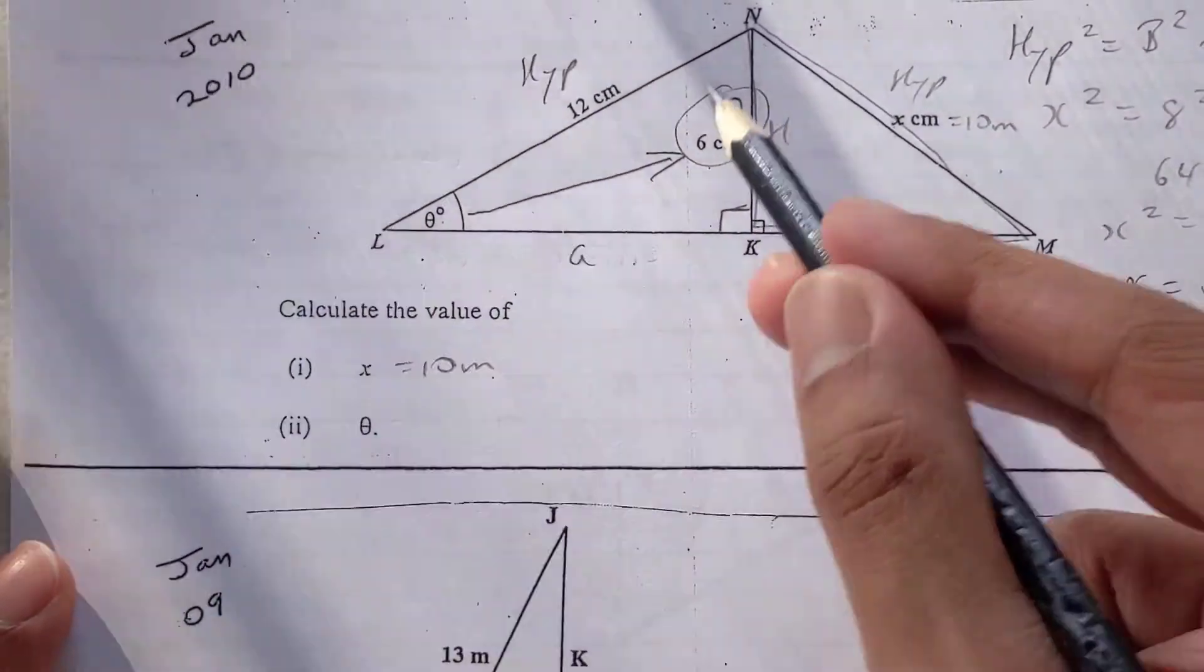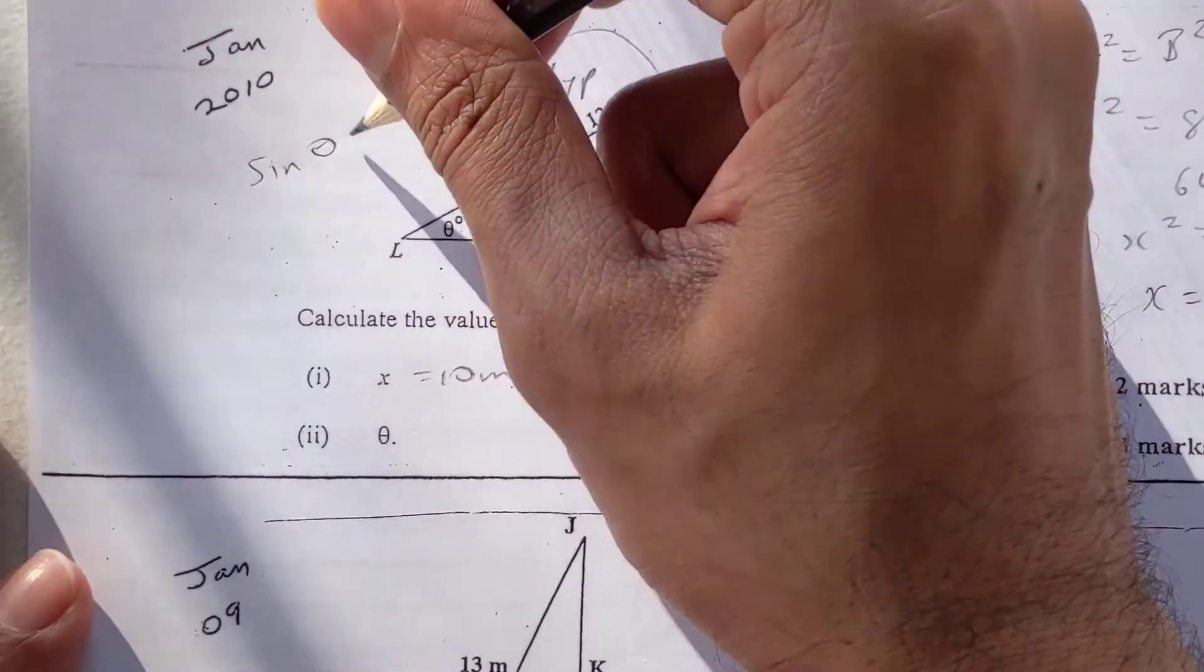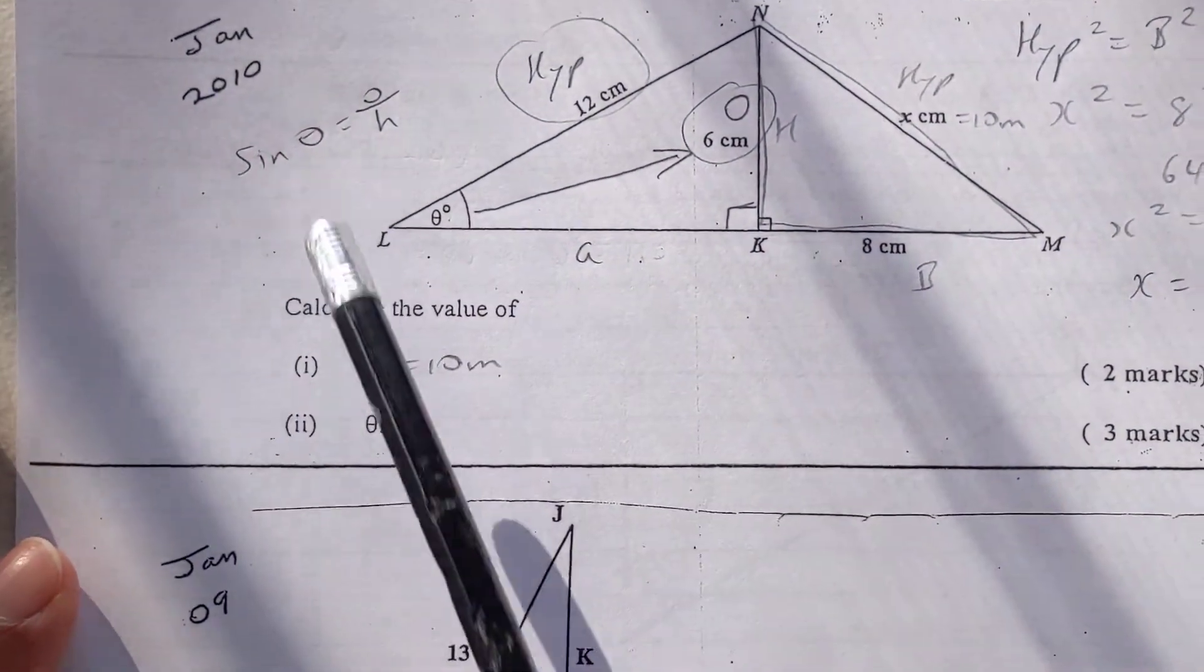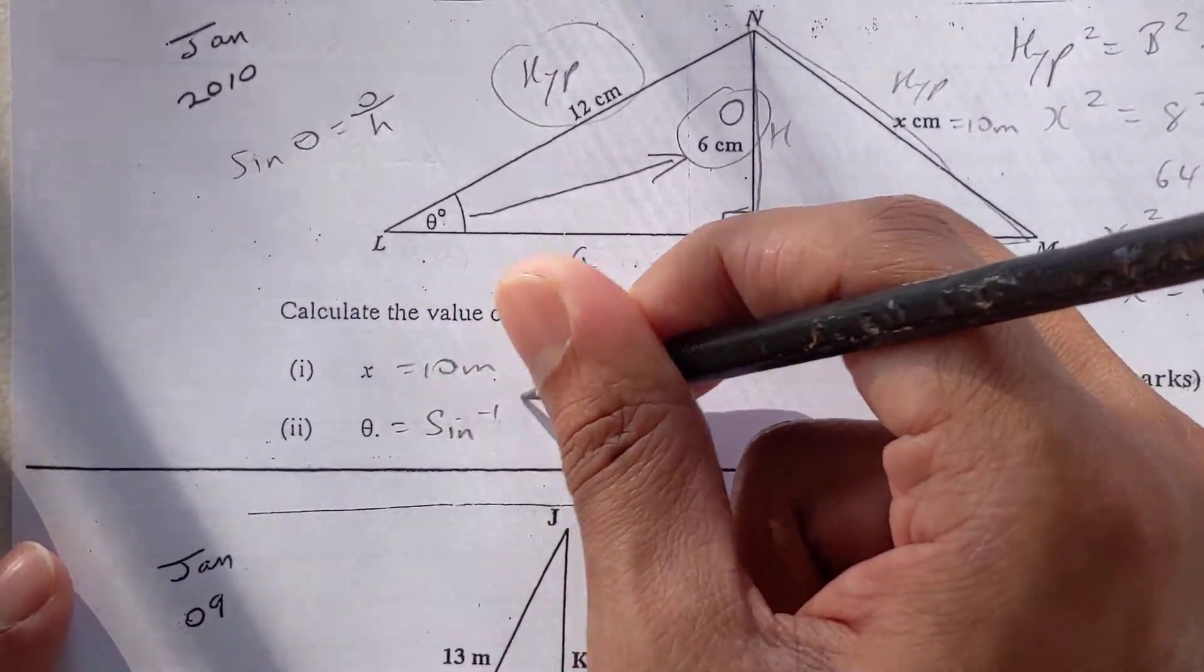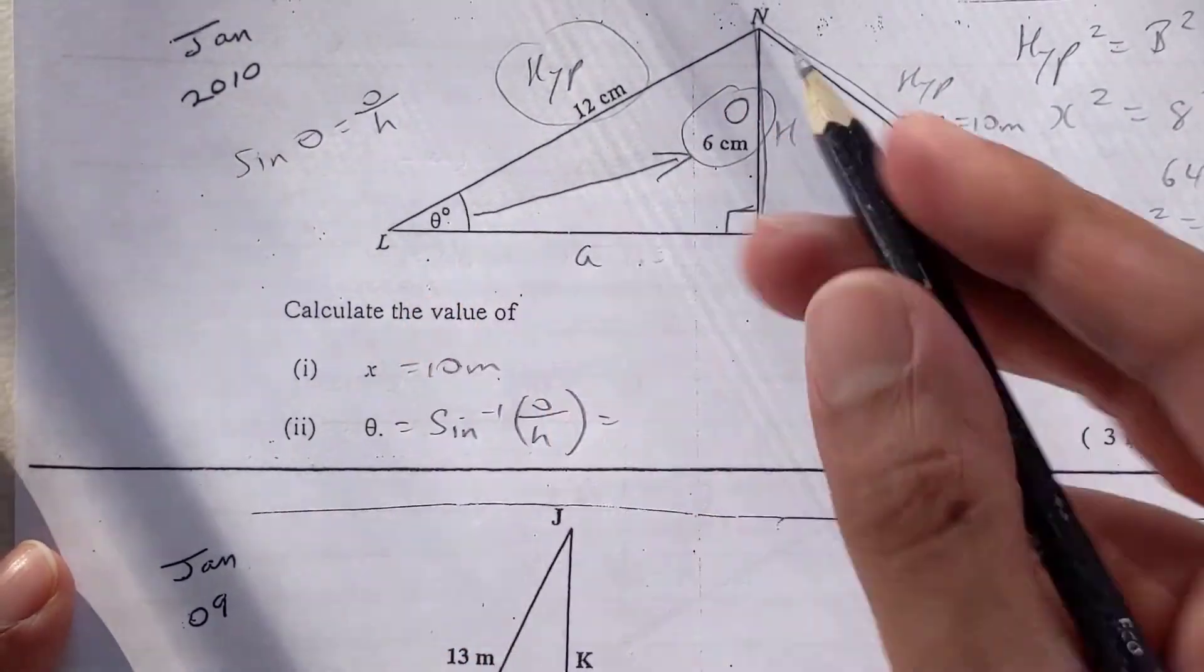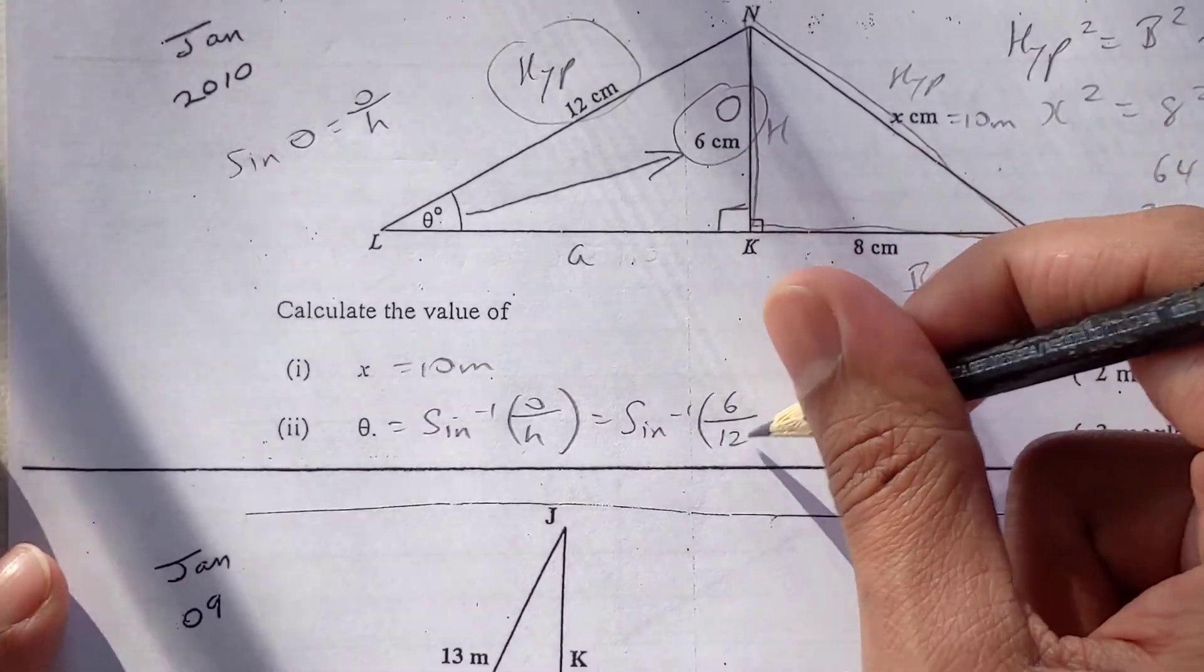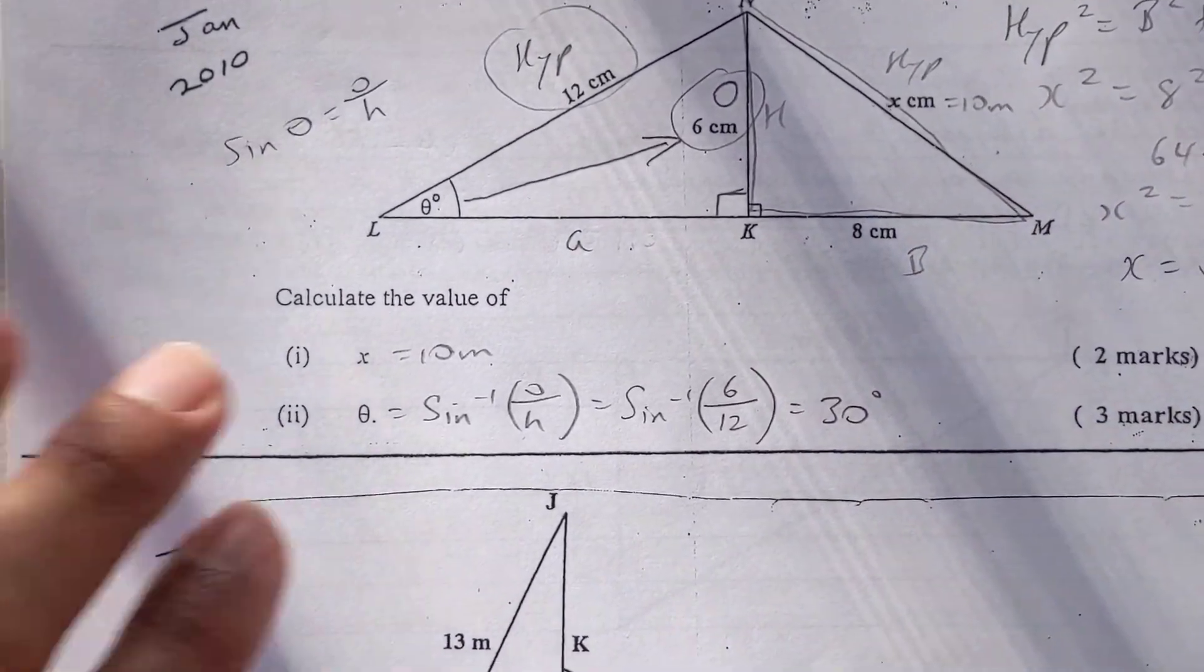They gave me both the opposite and the hypotenuse. So that means I have to use sine theta. However, they want an angle. And as we have seen before, once they want an angle, same ratio, but we can't use sine. We have to use the inverse of sine. Sine inverse. Same ratio though. Remember, they're not giving you this formula on the formula sheet. So it'll be sine inverse, opposite side is 6 over 12. I'm going to work that out. A nice, neat 30 degrees.